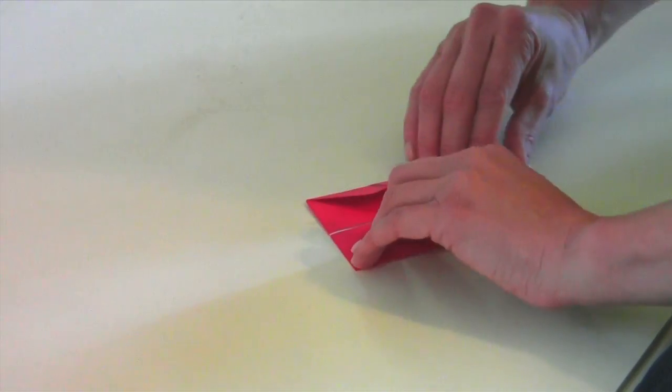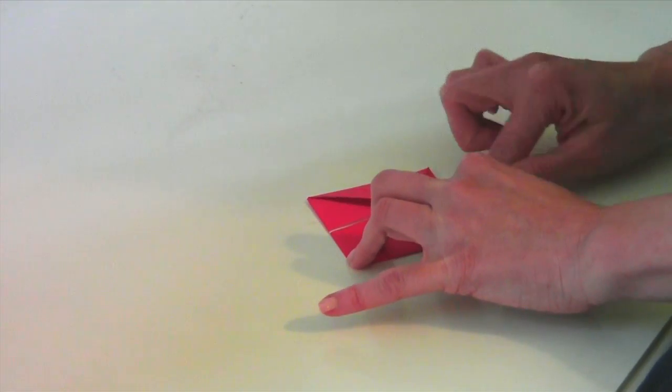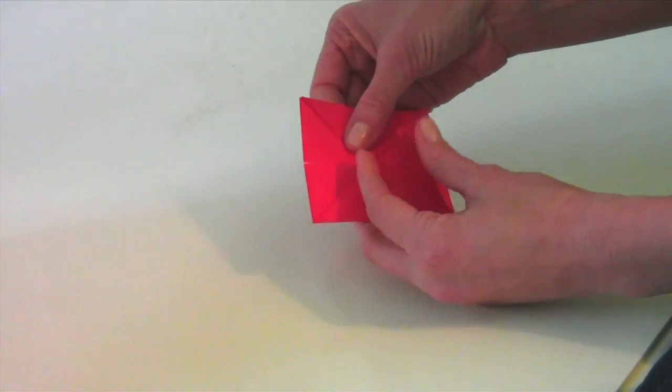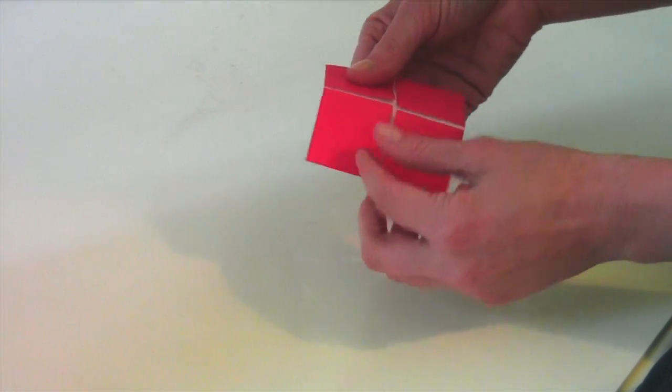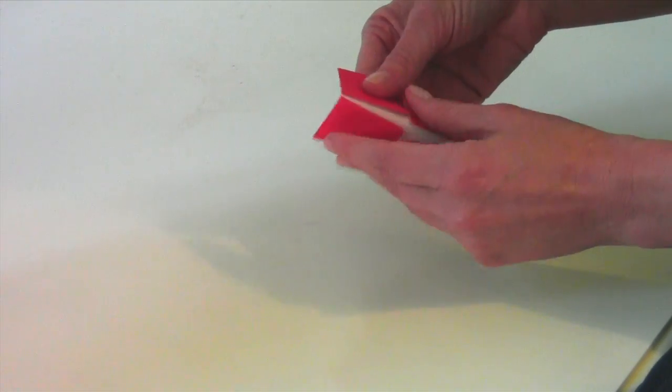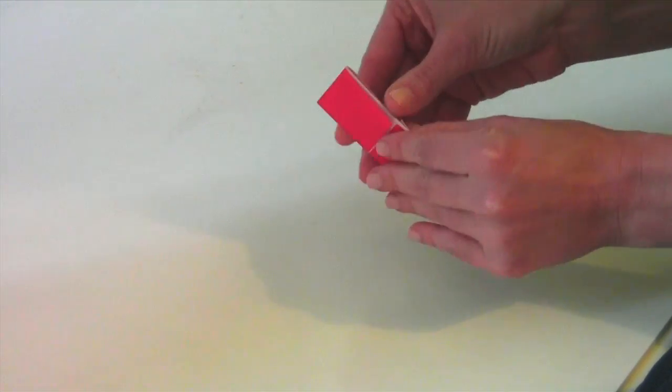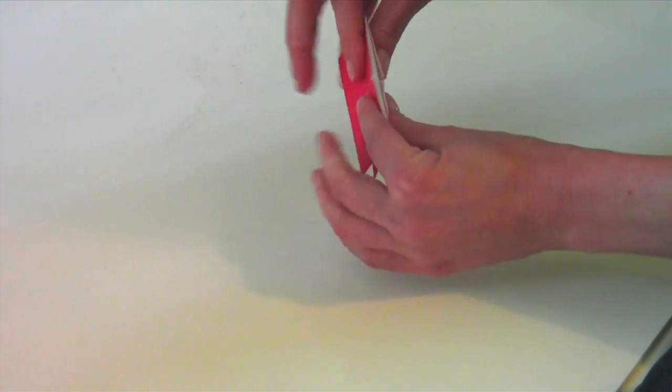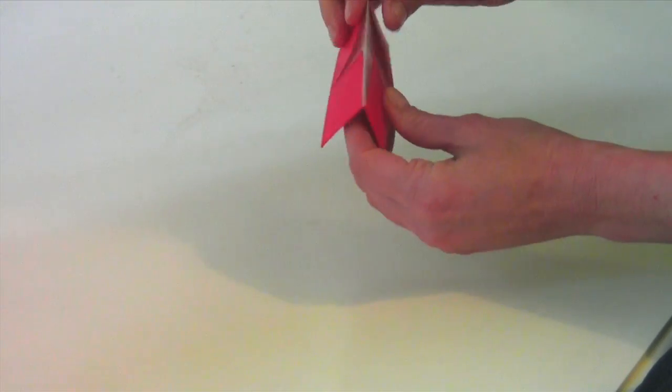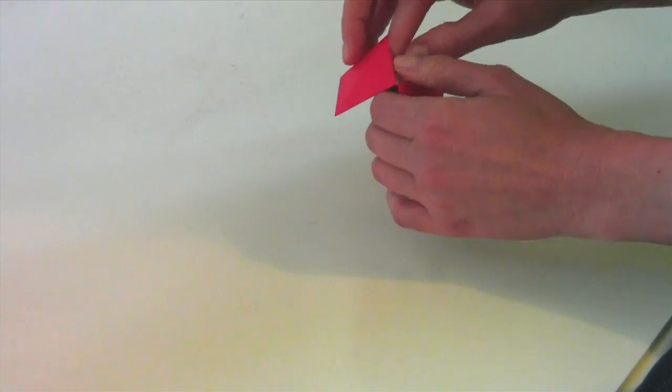When you've got that done, you turn it over and you can see this side has the open corners. You're going to fold that in half one way, you're going to fold it in half the other way, and then this side with the open corners is where you put your fingers in. That's how you make it work.